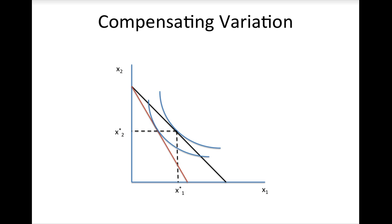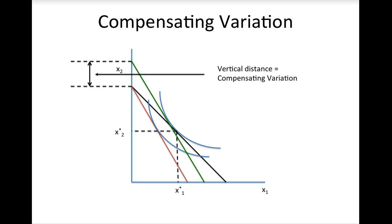If we want to keep this consumer as well off as he was before the price increase, we need to give him or her enough money to put them back on their original indifference curve. To figure out how much money this is, first shift the new budget line up until it is tangent to the original indifference curve. This is the green budget line in the picture. Note that it is tangent to the indifference curve at a different point than before the price change because it has a different slope than the original budget line.